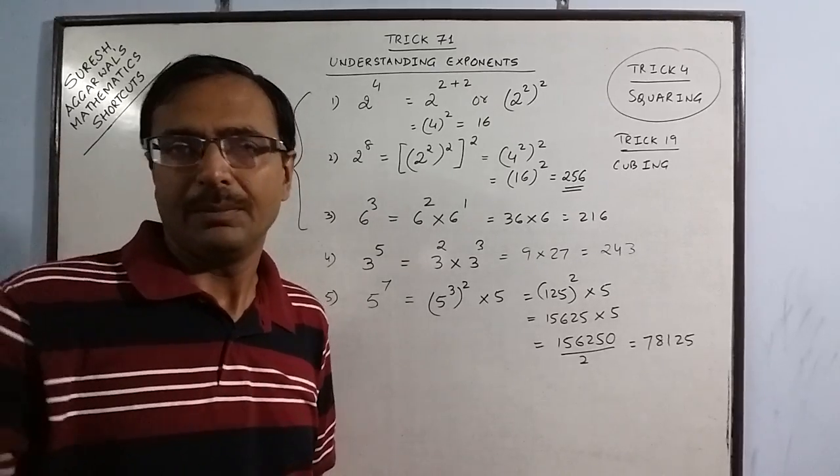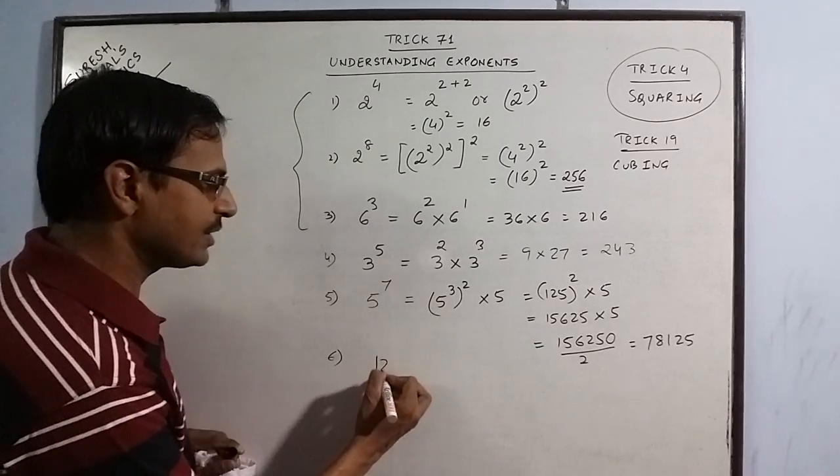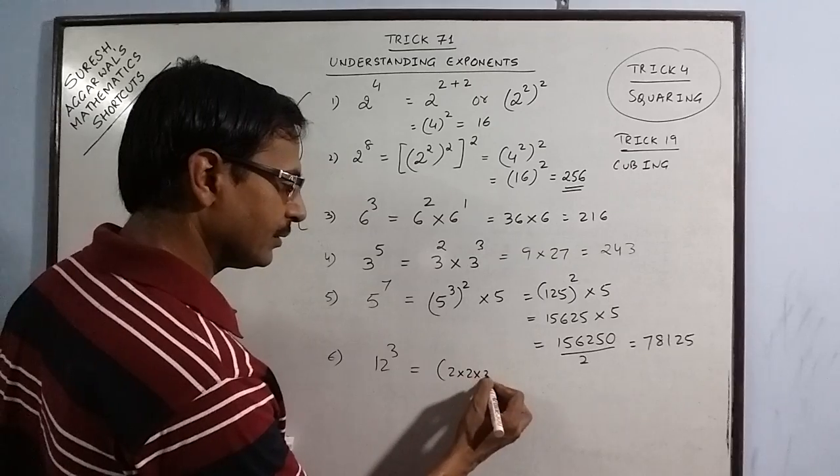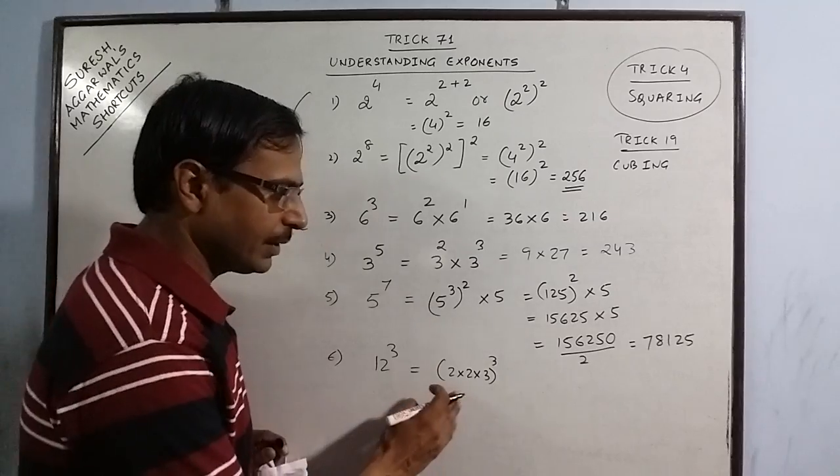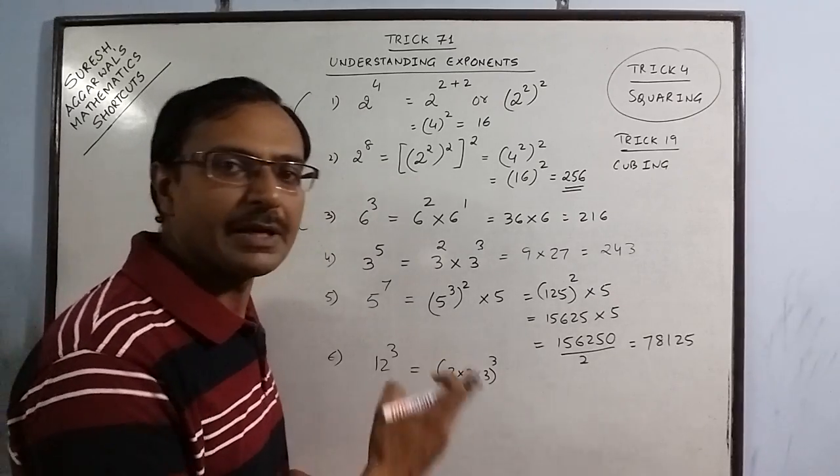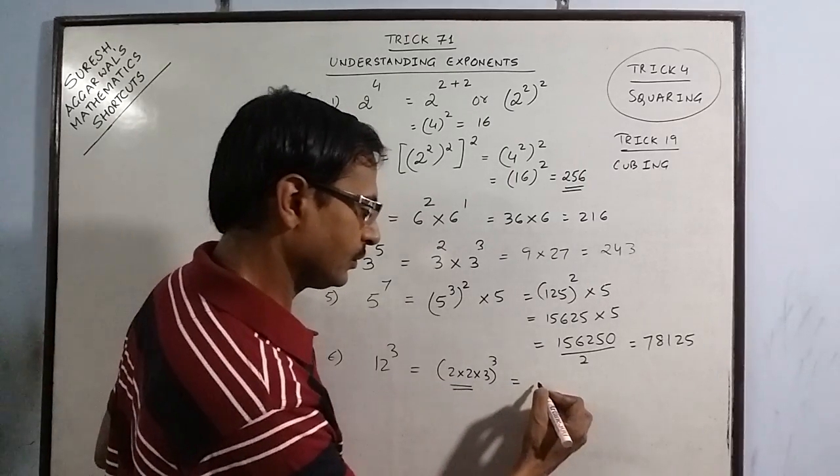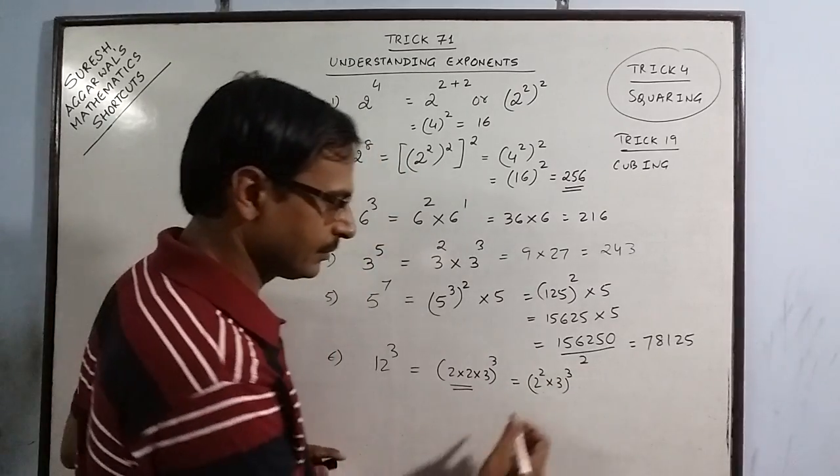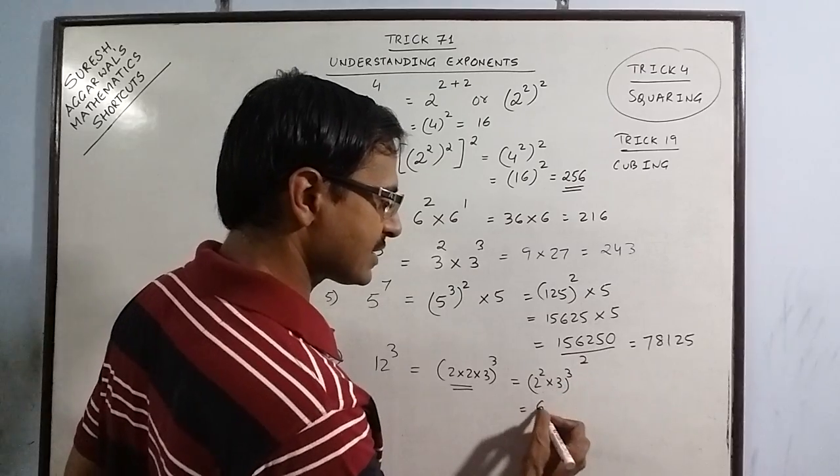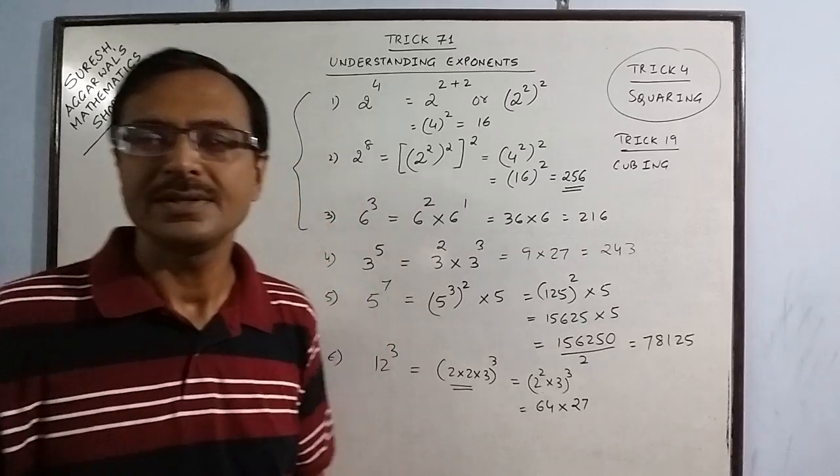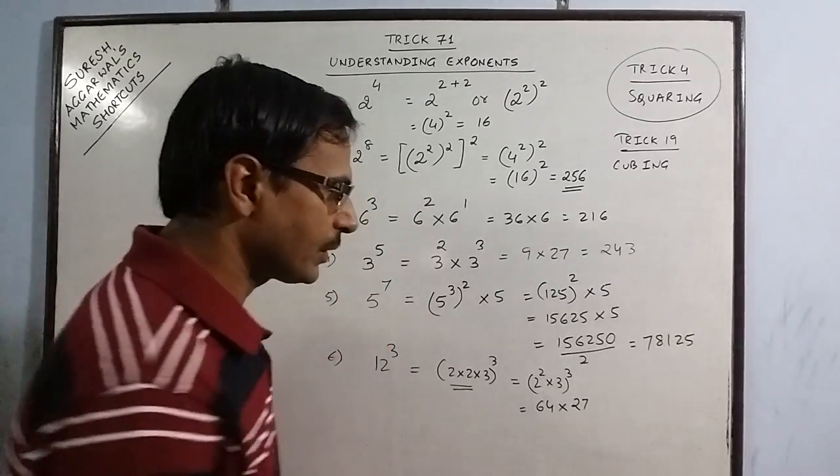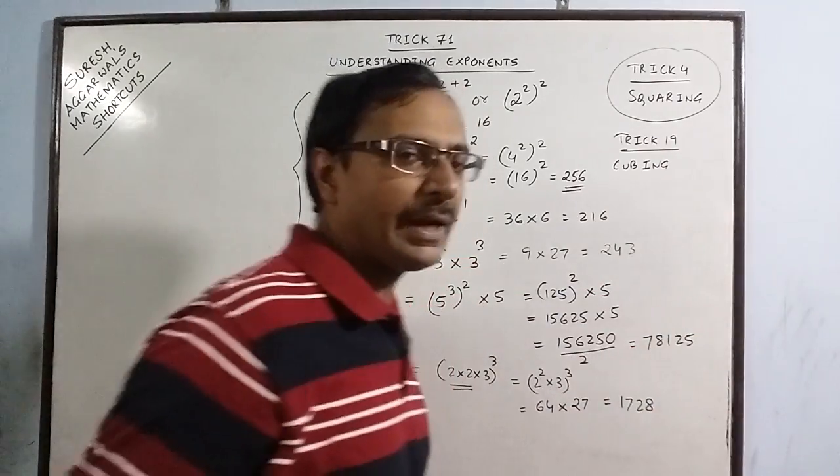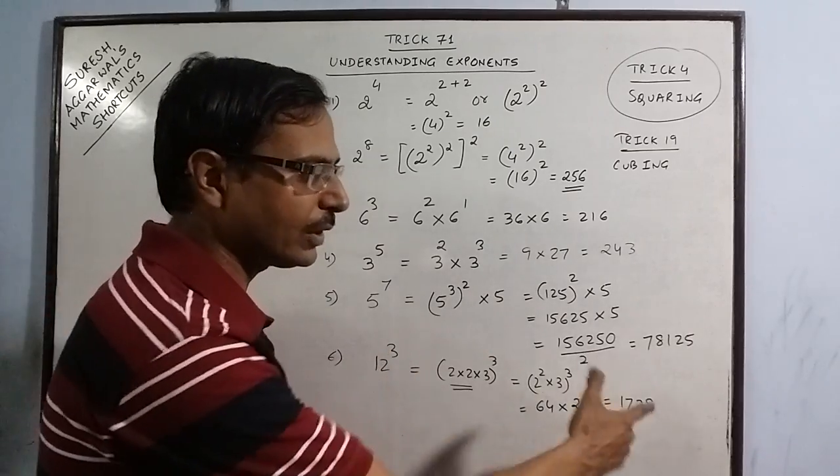Now coming to some products in which the base is a product of two numbers. Say we have 12 raised to power 3. If you factorize 12, you get 2 into 2 into 3. Multiplying 12 three times is difficult, but when you have 2 and 3 in the question, then multiplication becomes easy. This becomes 2 square, 4, or you can write 2 square into 3 raised to power 3. Now just separate the powers. 2 square is 4, 4 raised to power 3 is 64, 3 raised to power 3 is 27. Just find one product, 64 into 27 which will give you the required product. This is 1728, the cube of 12. Or you can use cubing method. Trick number 19 can teach you how 12 can be multiplied 3 times directly to obtain the result 1728.